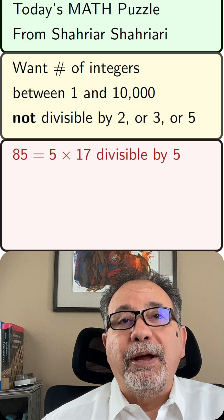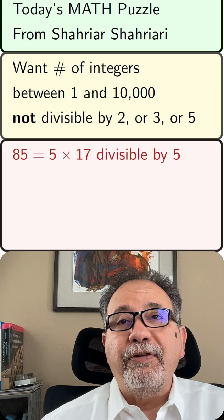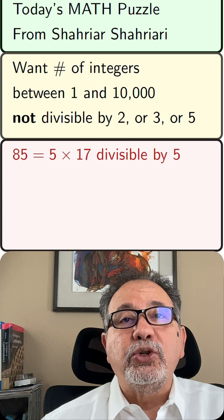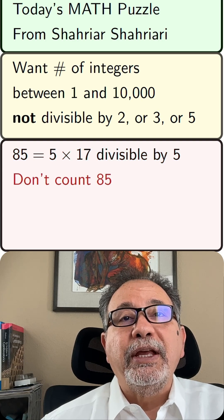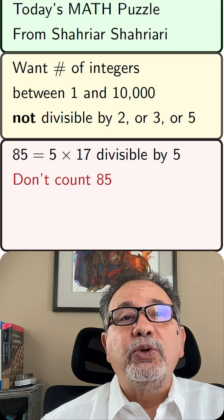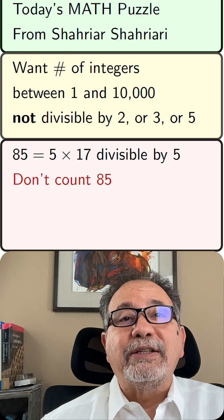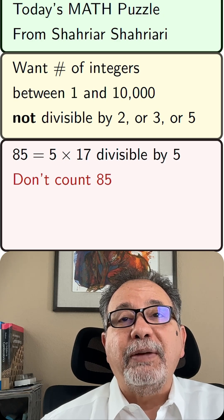85 is divisible by 5. Since you divide 85 by 5, you get 17 and there's no remainder. So 85 is not one of the integers that we want to count. Another way of saying the same thing is that you can factor 85 with 5 as one of the factors. 85 is 5 times 17.